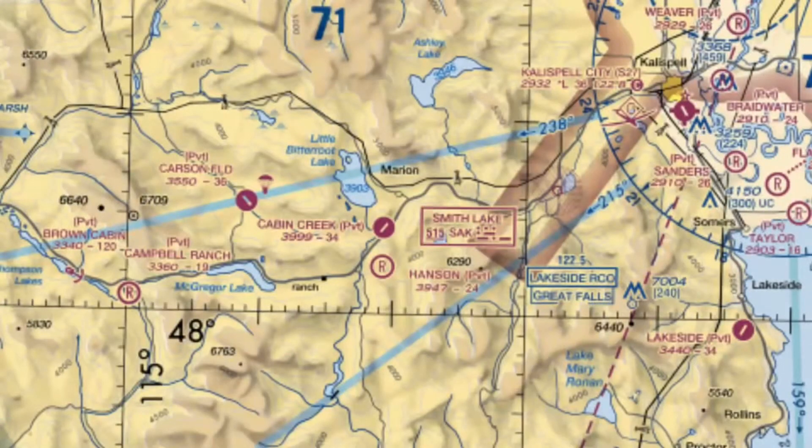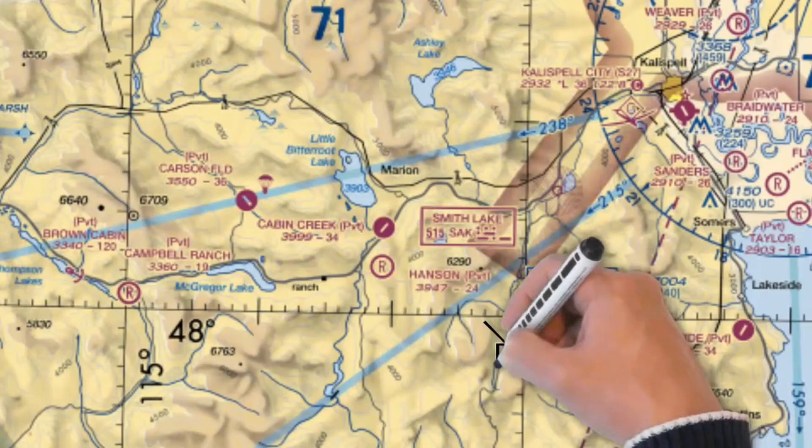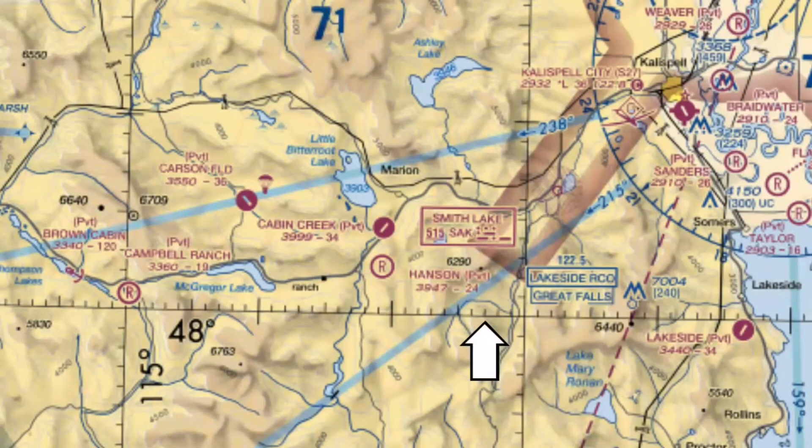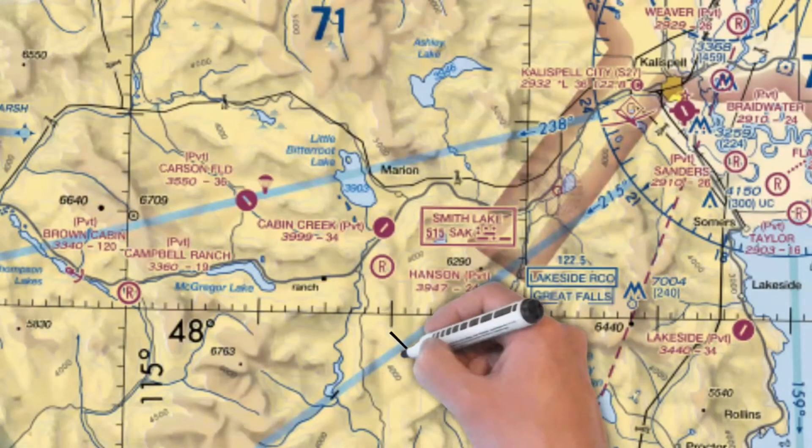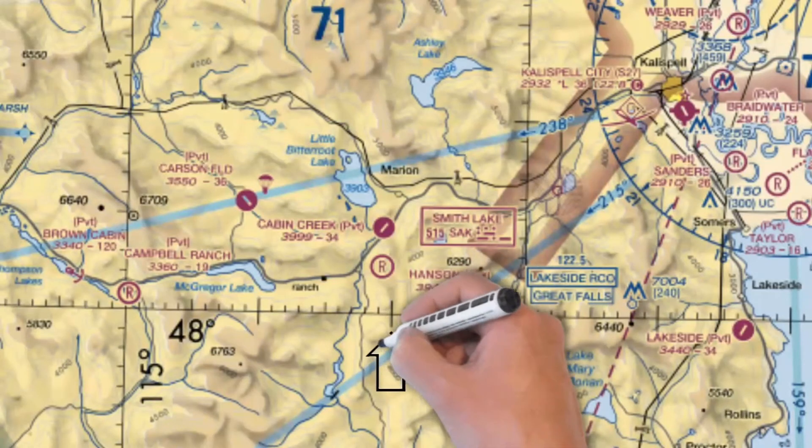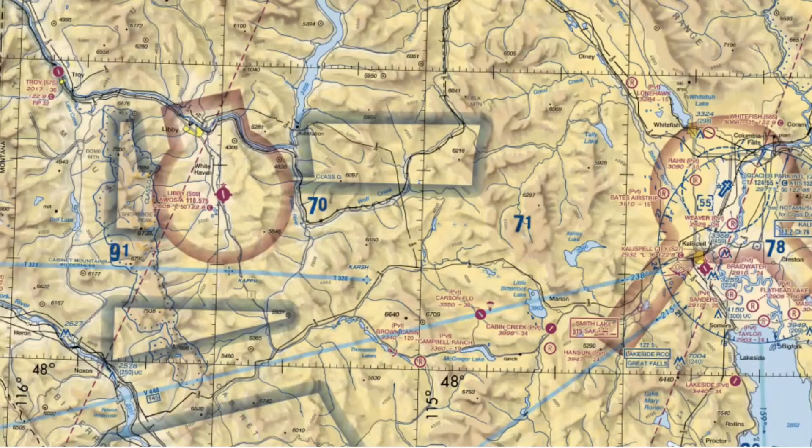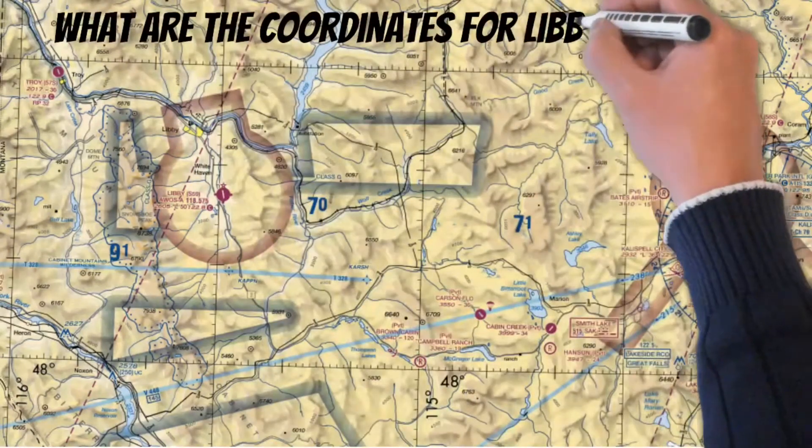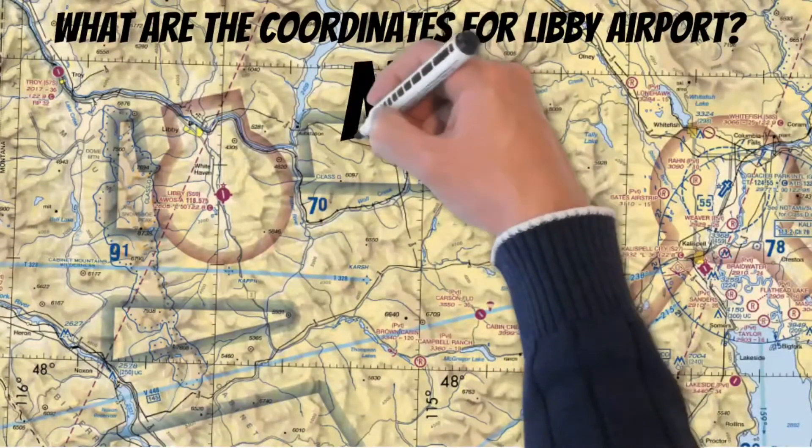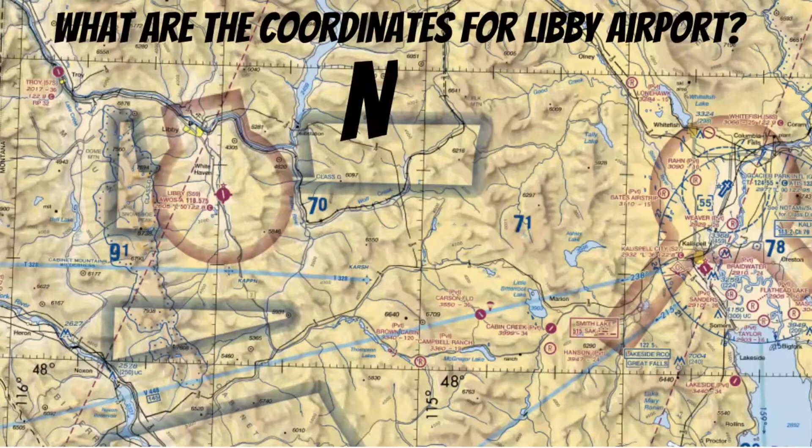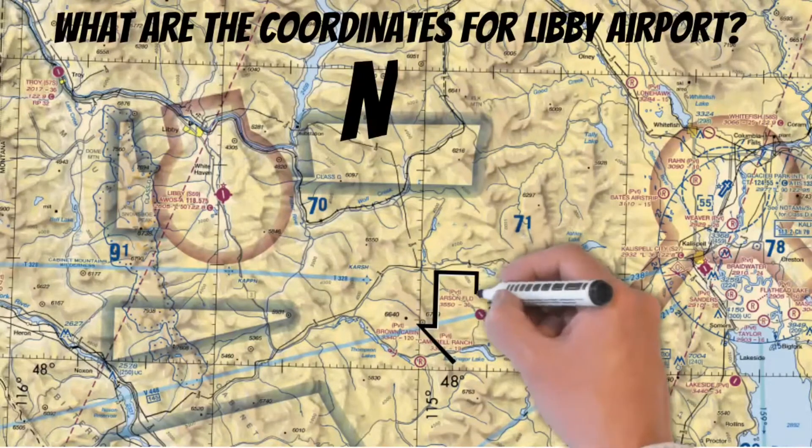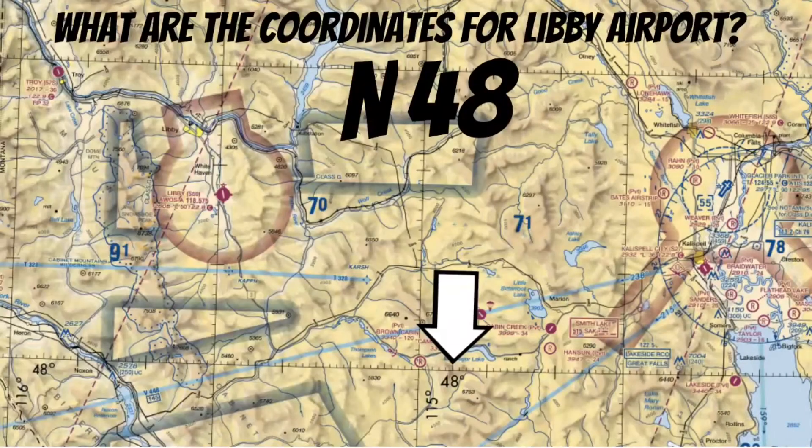Now if we zoom in even closer you can see that even the individual minutes are marked on these VFR sectionals. Don't forget these are one nautical mile. Then this bigger hash mark indicates 10 minutes. Once we know this let's look at the question again: What are the coordinates for Libby Airport? First of all it's pretty obvious that we're in the northern hemisphere so let's put an N here. Second Libby is north of the 48th parallel so let's put a 48 here.